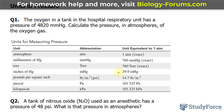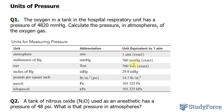Right underneath is a chart showing all the different units to represent pressure. Specifically in this column, we have one atmosphere and that's equivalent to 760 mmHg. Similarly, each row can be used to convert from one unit to the other.